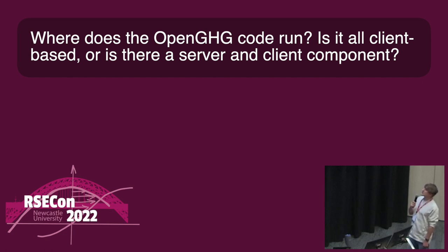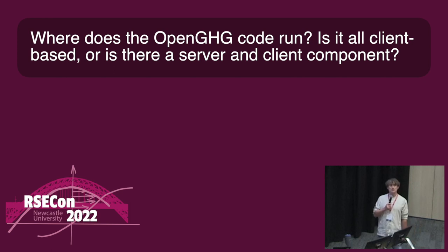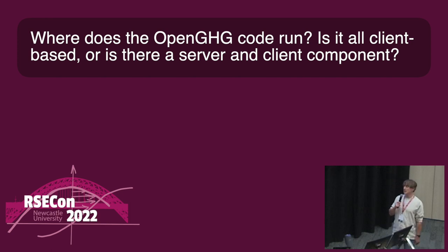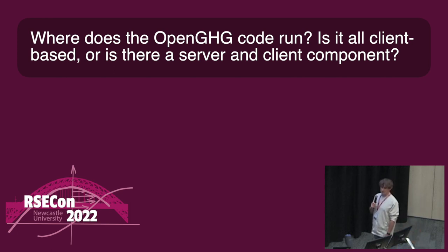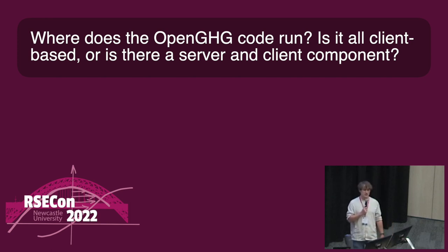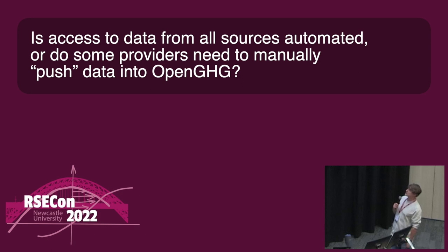Where does the OpenGHG code run - is it all client-based or is there a server and client component? There are cloud functions that do most of the processing and standardization. You can run it locally if you want - it uses environment variables to detect whether you're running on the hub or locally. If you're on the hub it sends packaged data off to the serverless functions, which handle all the storage in the cloud object store. Otherwise there are just functions that handle calls to the object store. So it's all detected based on the environment.